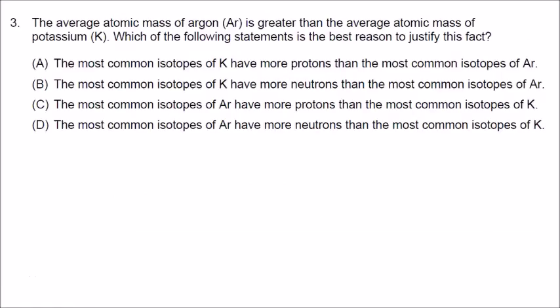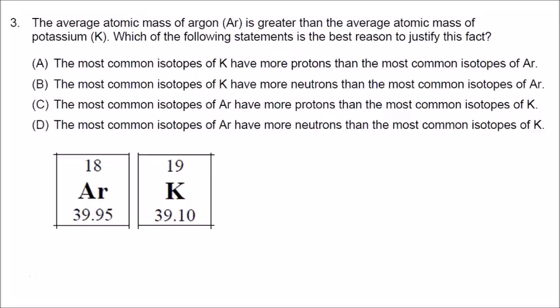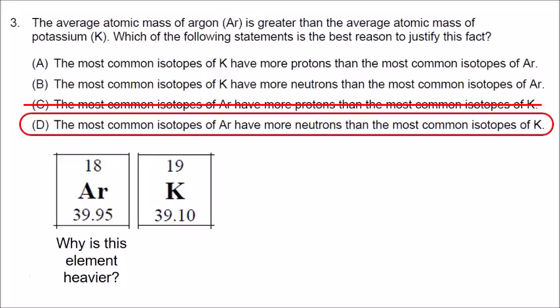Number three: the average mass of argon is greater than the average mass of potassium — argon is around 39.95 and potassium is around 39.1. Choice C, which says the most common isotopes of argon have more protons, is incorrect because argon has 18 protons and potassium has 19. So why is argon heavier? It must be because argon has more neutrons. So number three is D: neutrons make argon a little bit heavier than potassium.